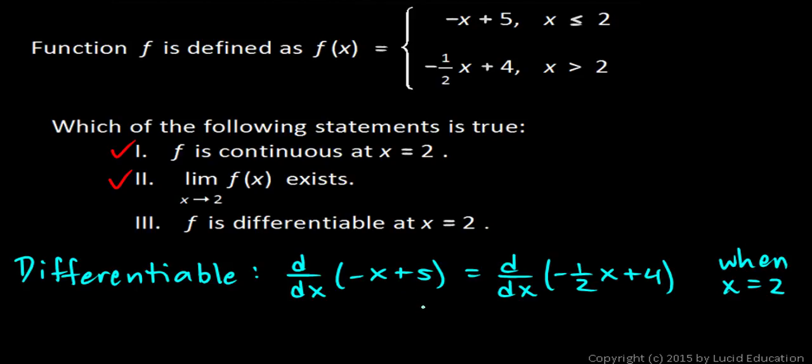Okay, well, these derivatives are pretty easy to evaluate. On the left side here, the derivative of negative x plus 5 is just negative 1. And we ask, is that equal to the derivative on the right side? And the derivative of this is negative 1 half. So those are not the same.